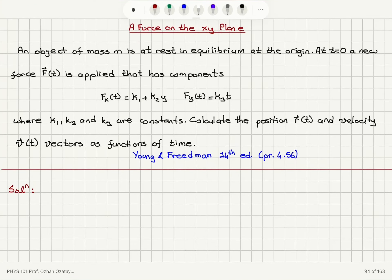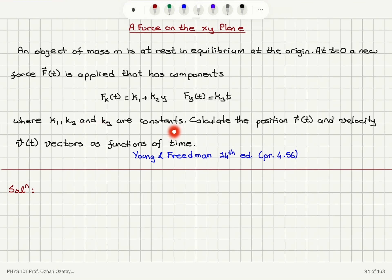A force on the xy plane. An object of mass M is at rest in equilibrium at the origin. At t equals 0, a new force f(t) is applied that has components: fx(t) = k1 + k2·y, and fy(t) = k3·t, where k1, k2, and k3 are constants. Calculate the position r(t) and velocity v(t) vectors as functions of time.